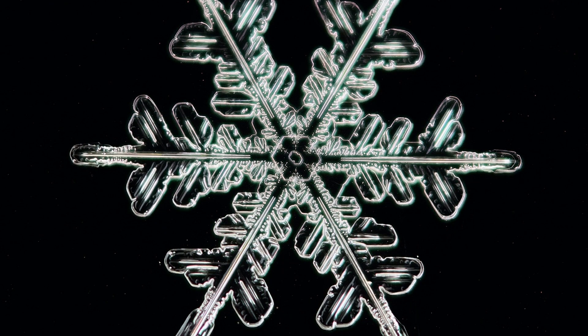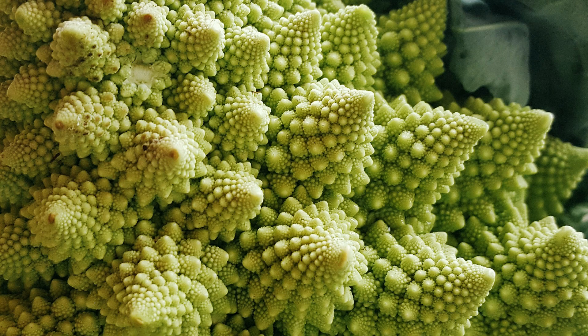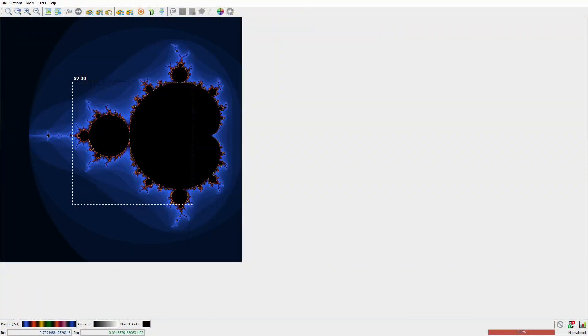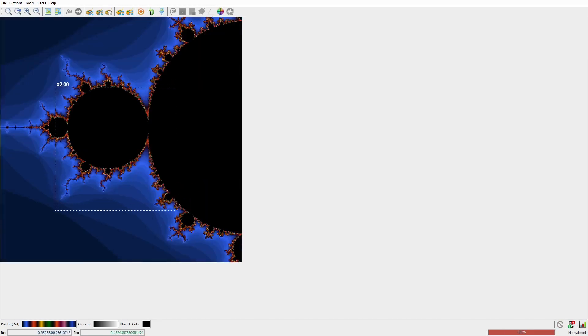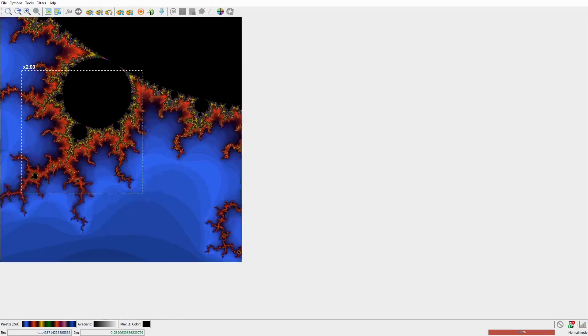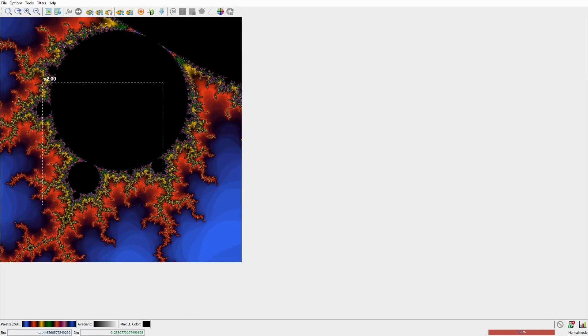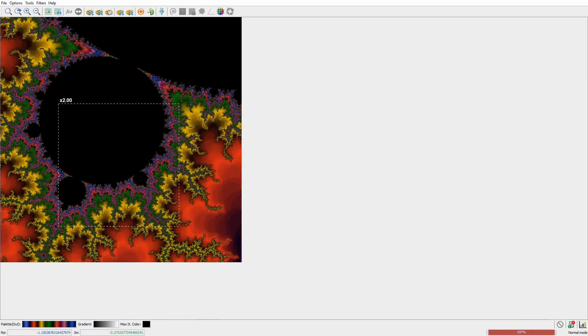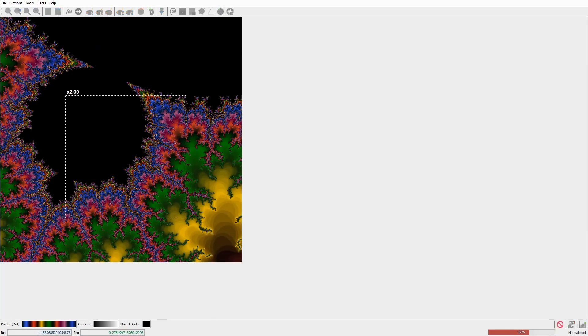If you've ever admired the staggering symmetry in a snowflake or the repeating patterns in a fern leaf or cauliflower, you've appreciated the beauty of fractals. Fractals are geometric shapes that can be split into parts, each of which is a reduced reflection of the whole, like a mirror reflecting another mirror, creating an infinite cascade of images.